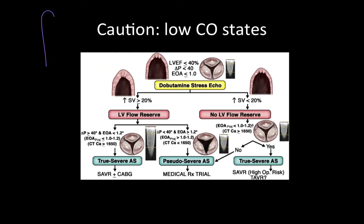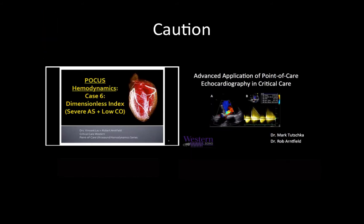A brief word of caution about low cardiac output states: in cases of severely reduced myocardial contractility, you can underestimate the severity of aortic valve disease, given that reduced contractility will not be able to generate a pressure gradient that accurately reflects the severity of the stenosis. In the outpatient setting, these patients would be sent for a dobutamine stress echo. However, on the wards or in critically ill patients in the ICU, this is not practical.